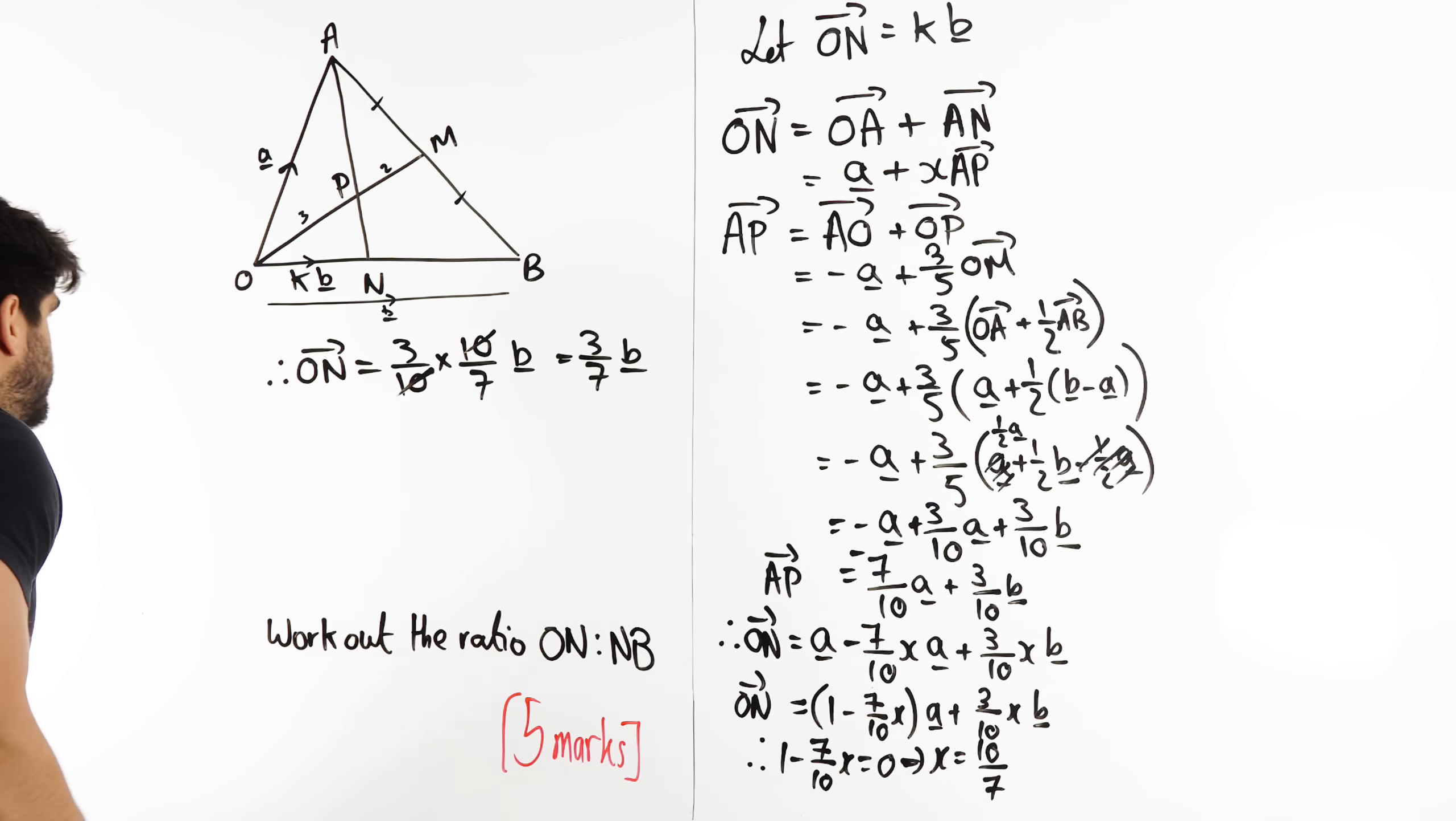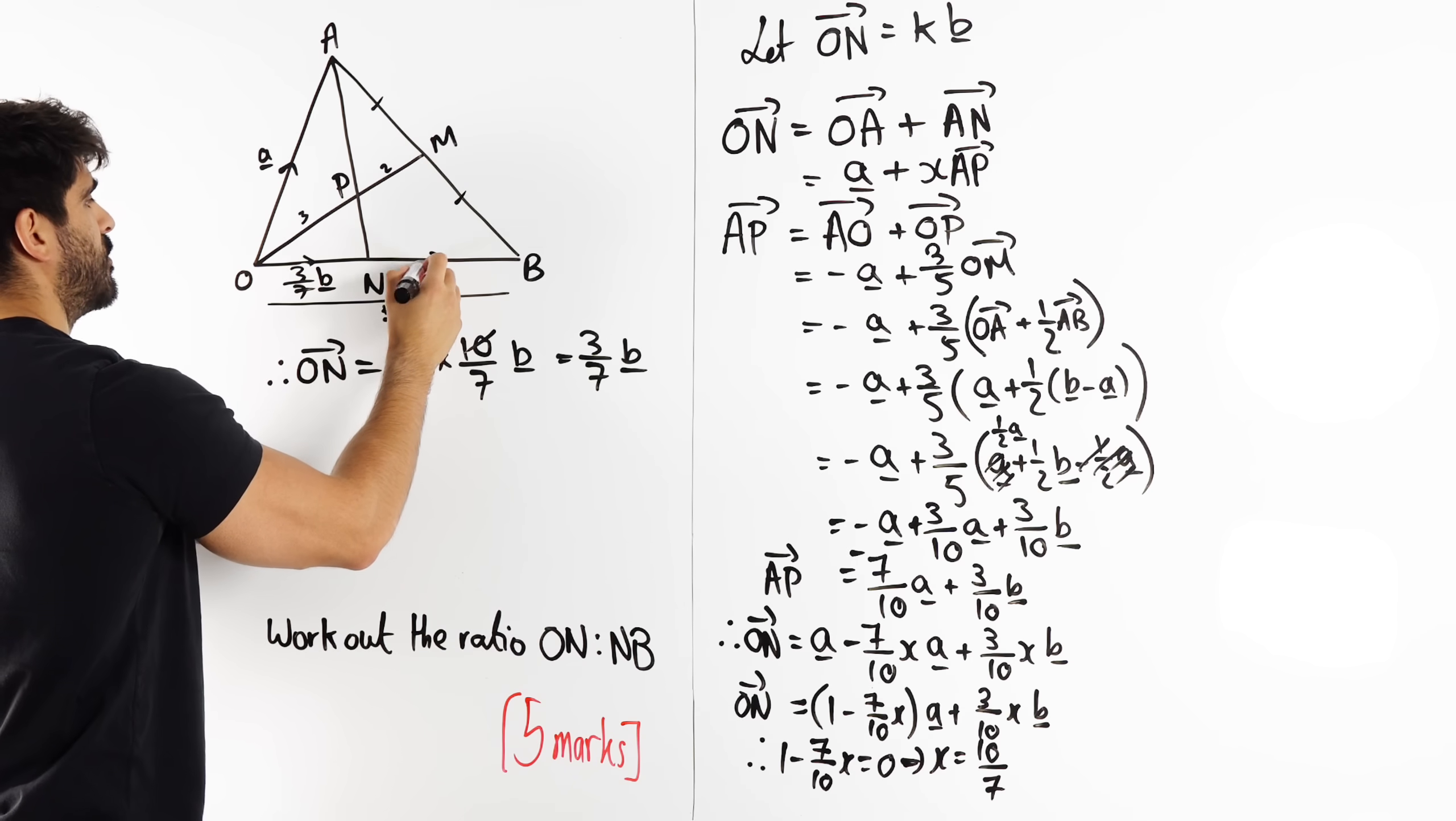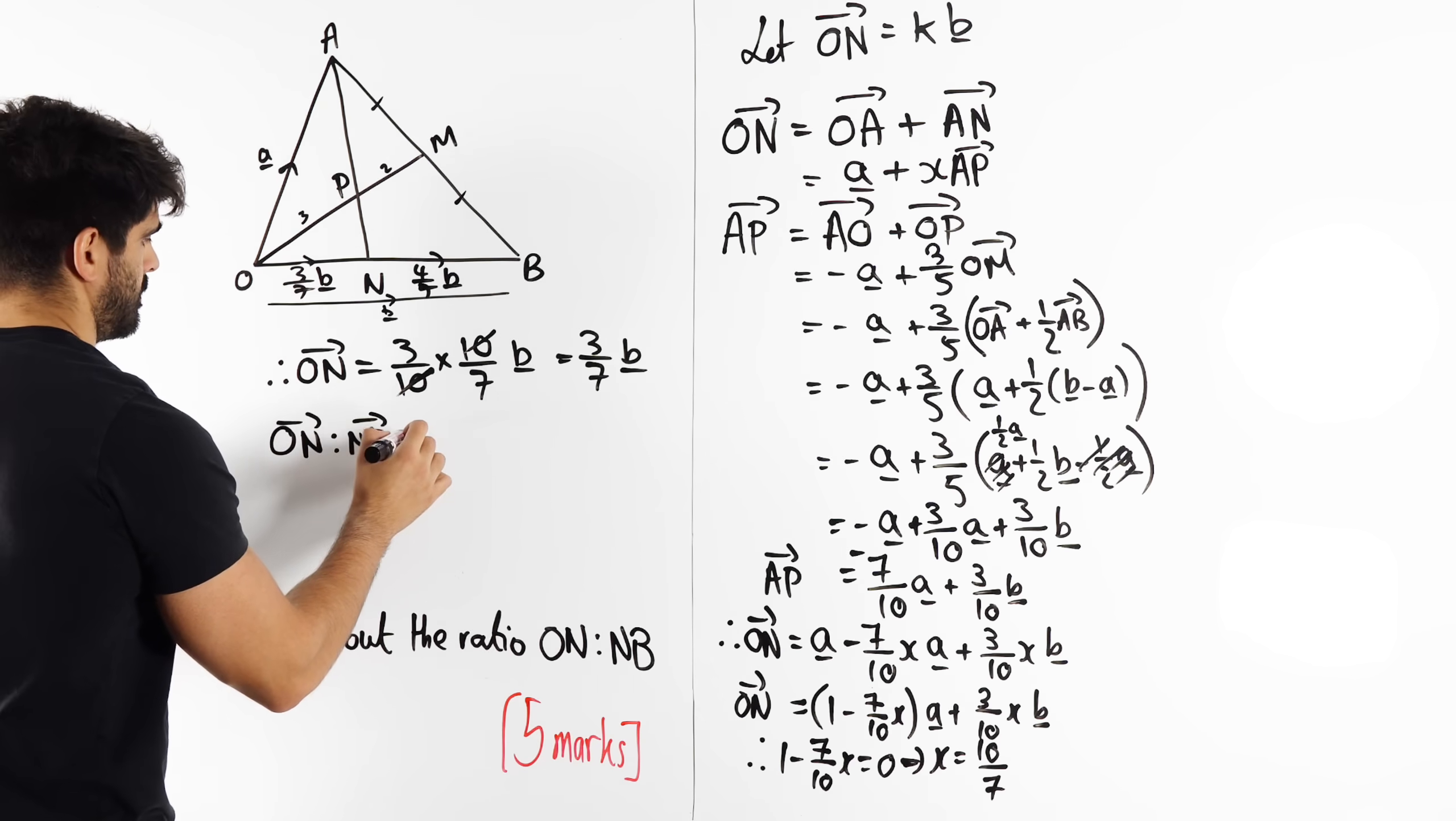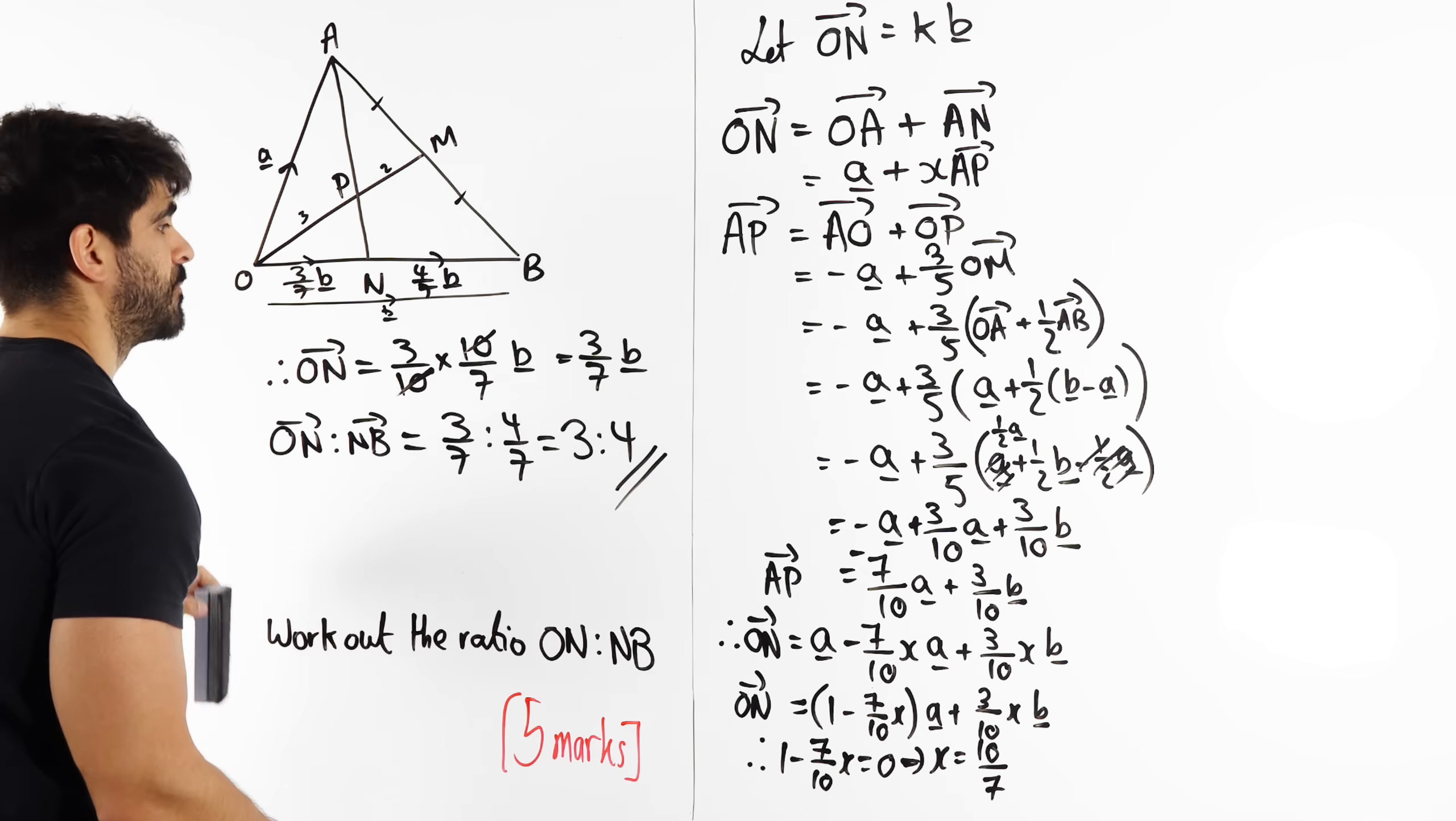So, what does that mean then? Well, if this whole vector is B and this here is three sevenths B, then the other side must be four sevenths B. These two need to total B. So, therefore, the ratio, the ratio between ON:NB is three sevenths to four sevenths. So, ON to NB is three sevenths to four sevenths, which when we times both sides by seven, we get three to four. And that's your answer.